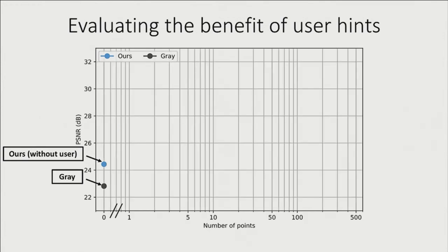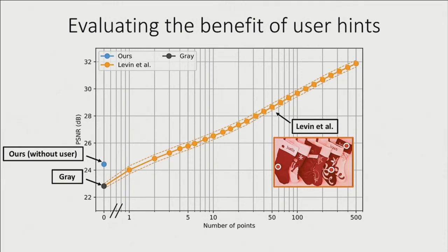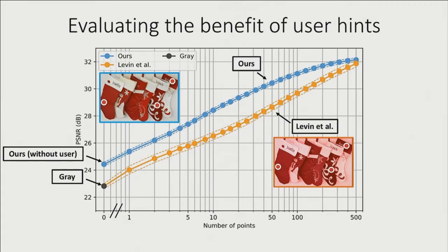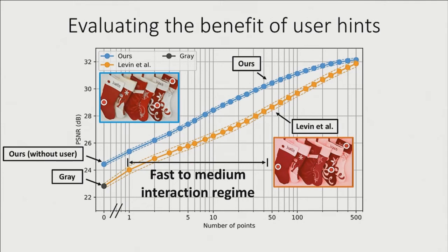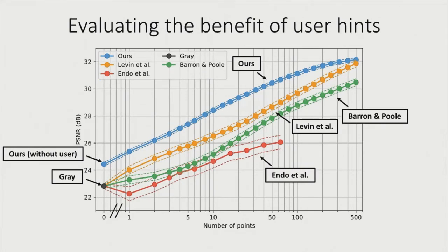We add random user inputs with ground truth color, shown on a log scale. Looking at the Levin baseline, as we reveal more points we see increasing PSNR. Our system also shares this desirable feature. In the fast-to-medium interaction regime — like 5, 10, or 50 points — our method performs better. At 500 points the two curves intersect, which makes sense because given that many points, high-level knowledge from natural image priors is less important and a low-level propagation rule works equally well. We also show recent 2016 methods, which our system also outperforms. All three baseline methods lack access to the natural image prior.